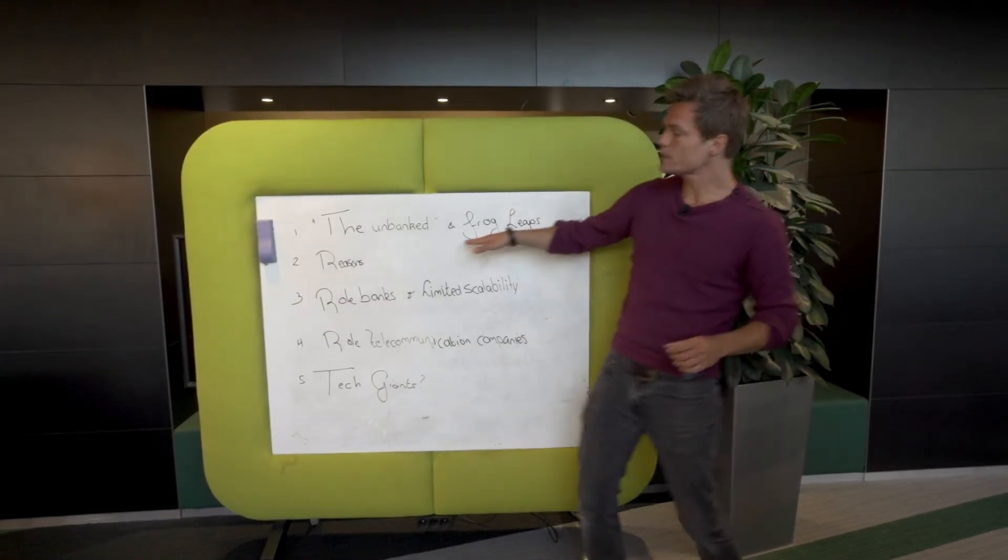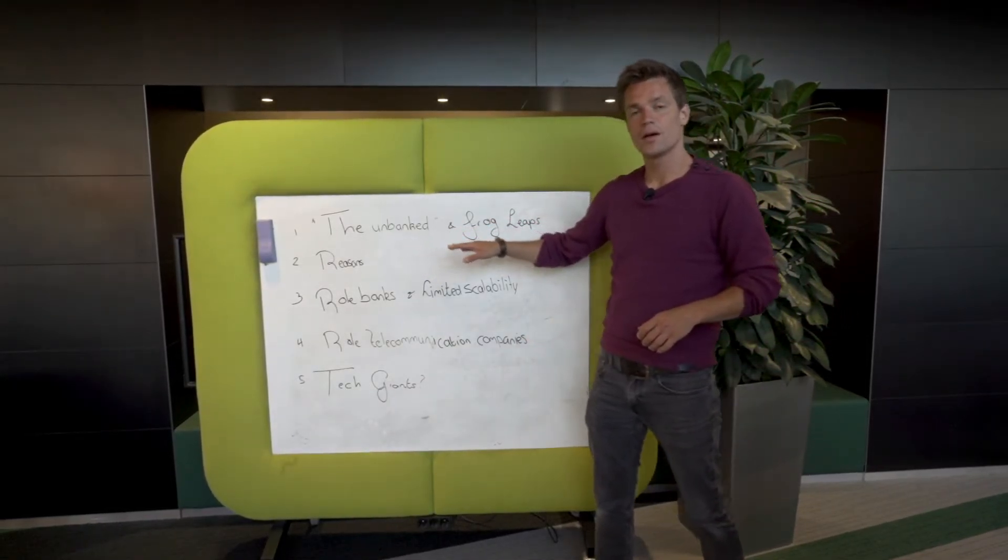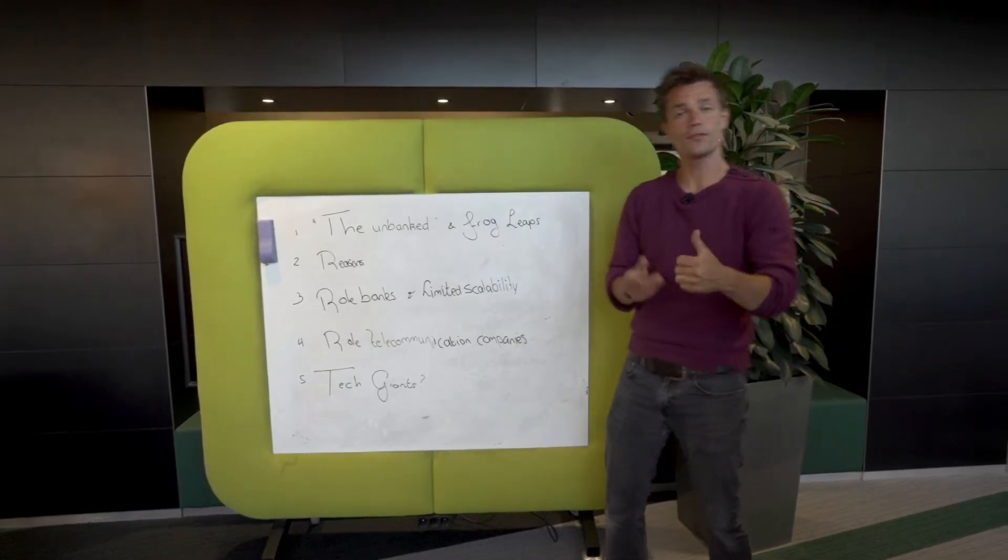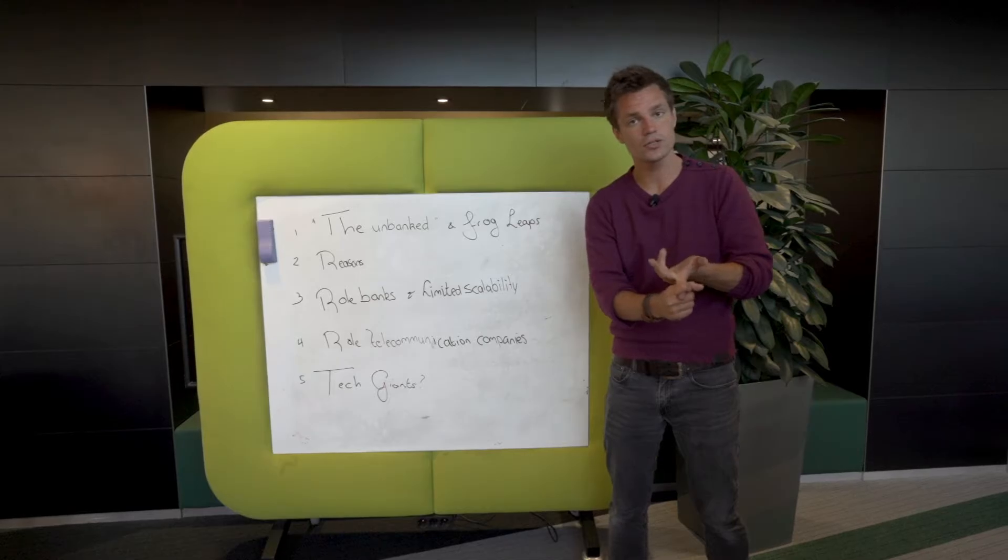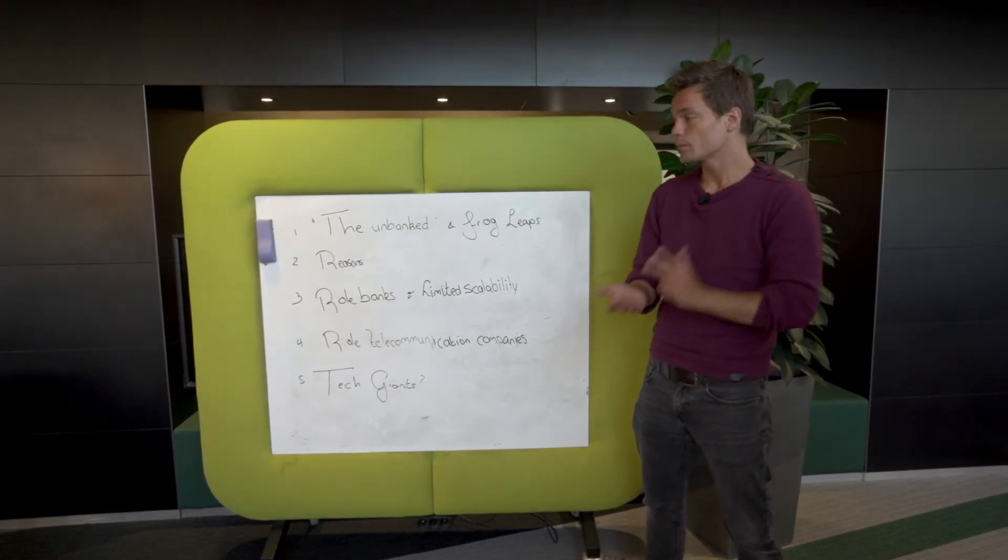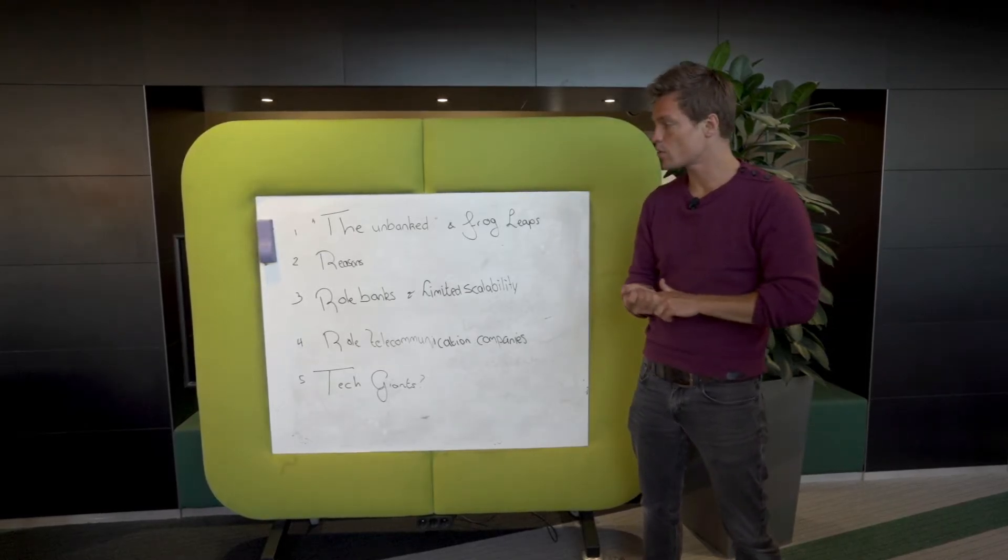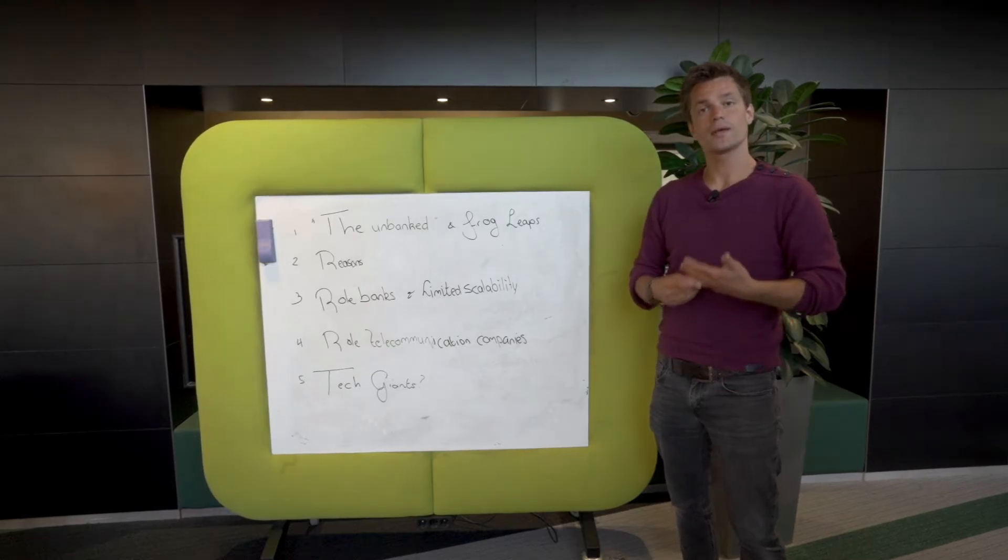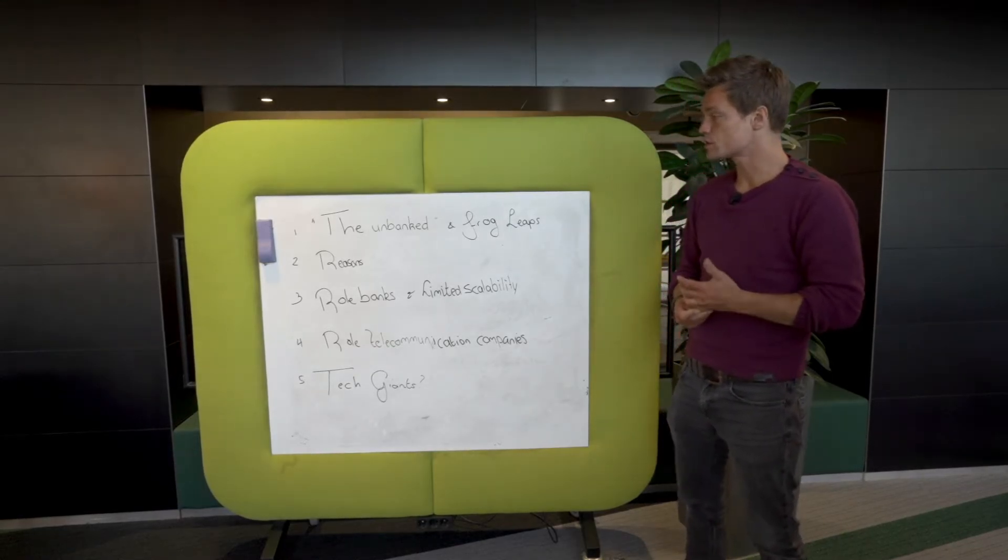So the reasons why the unbanked don't have banks, you can find in the literature. For example they don't have the money, or they don't see the reasons to use it because they can suffice perfectly fine without. They don't trust the banks or technology. Or it's too expensive. Religion comes into place, culture comes into place, belief systems and such.